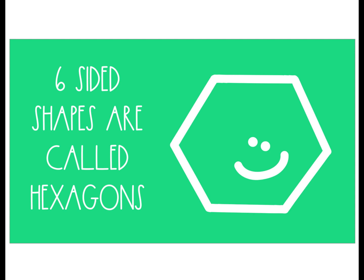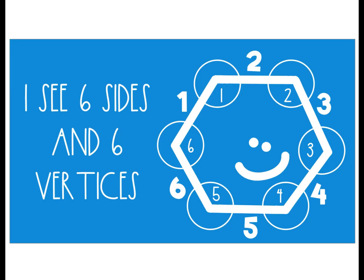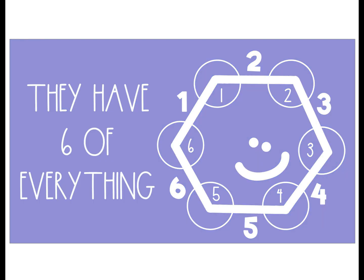Six-sided shapes are called hexagons. They have six of everything. I see six sides and six vertices — they have six of everything.